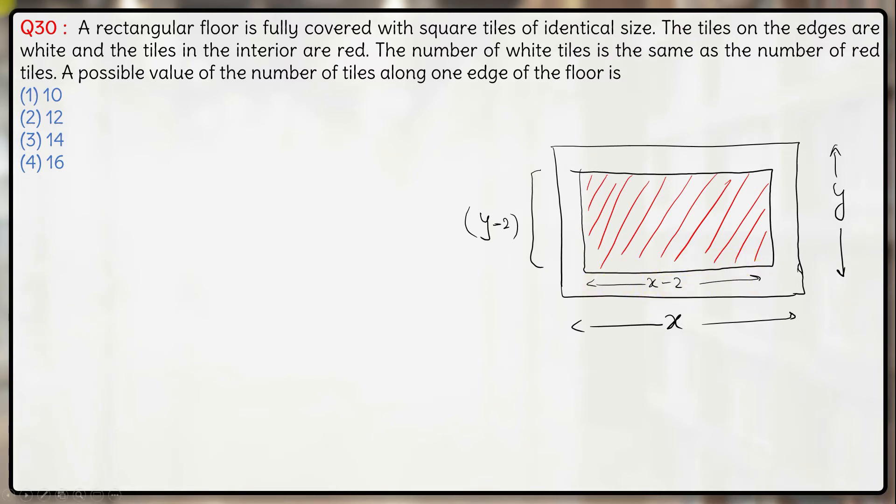So the total number of red tiles will be x minus 2 into y minus 2. This is equal to half of the total number of tiles which is x into y.